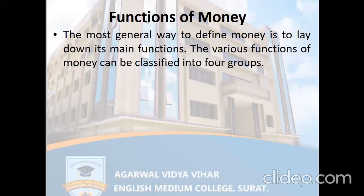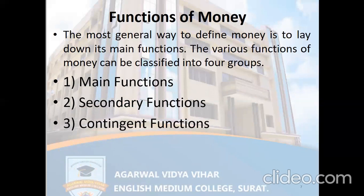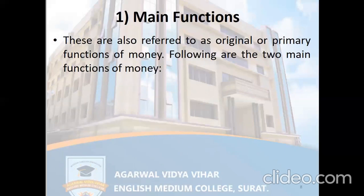The various functions of money can be classified into four groups. First is the main function, also known as the basic or primary function. Second is the secondary function. Third is the contingent function. Fourth is other functions, or miscellaneous functions. We will discuss all these functions in detail. Main functions are also known as original or primary functions of money, sometimes called basic functions.